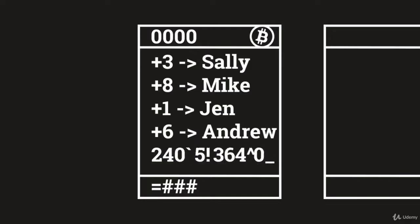Plus three to Sally, plus eight to Mike, plus one to Jennifer, and plus six from Andrew, etc. etc. Now we use a lot of fancy math to figure out how the system adds up correctly, to figure out if anything has been tampered with or changed. But otherwise, that's about it. This is the basis of blockchain tech.